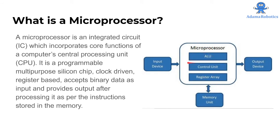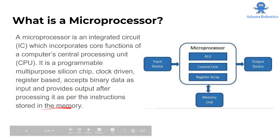Using these arithmetic logic units, the binary data are processed. And then, out of this, we get meaningful information in the output device. A microprocessor incorporates the core functions of a computer's CPU. It is programmable, it is made with silicon, it is clock driven because we have to know how long a calculation should be done for. And it accepts binary data and provides output as per the instructions stored in the memory.